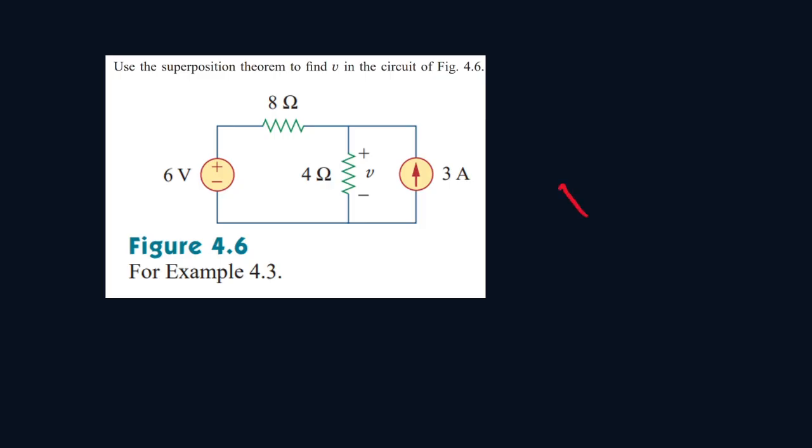Now if it's a dependent source, it usually looks something like this. If it's a circle, it's independent. And then if it's a rhombus shape, then it's dependent.